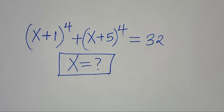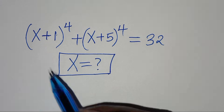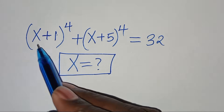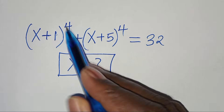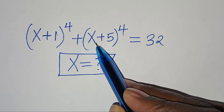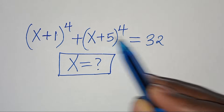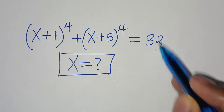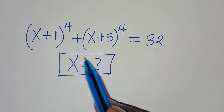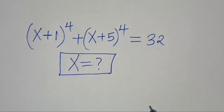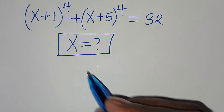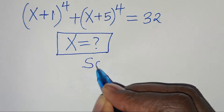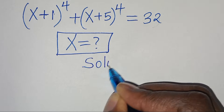Hello everyone, you are welcome to solve this nice algebra problem, which is (x + 1) to the power of 4 plus (x + 5) to the power of 4. This is equal to 32. So what is the value of x? Let's provide a solution.